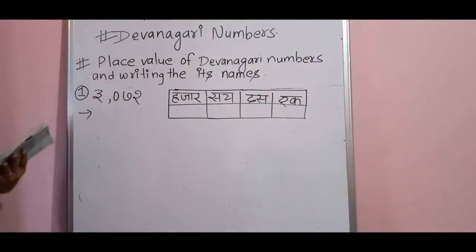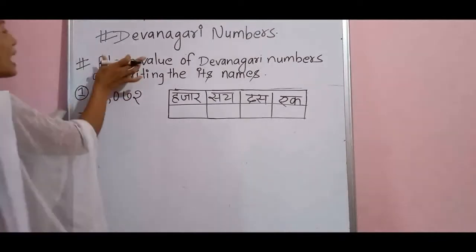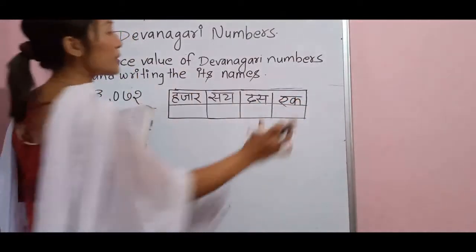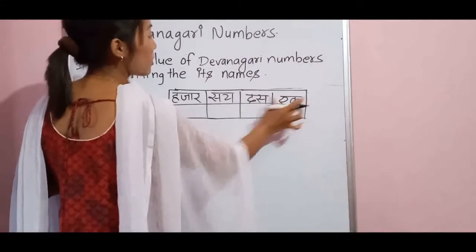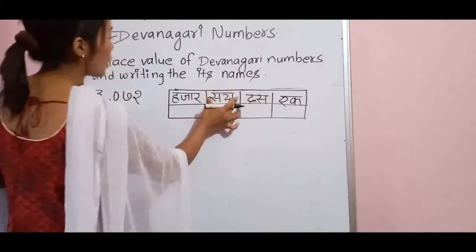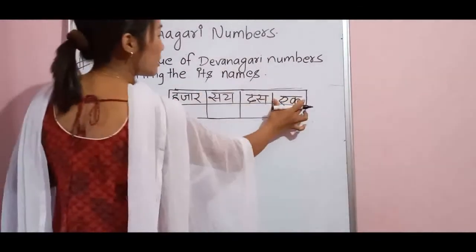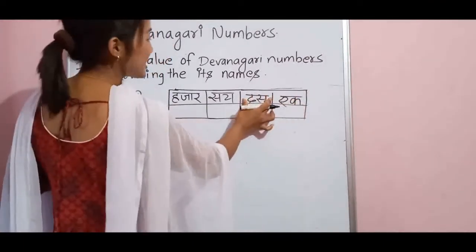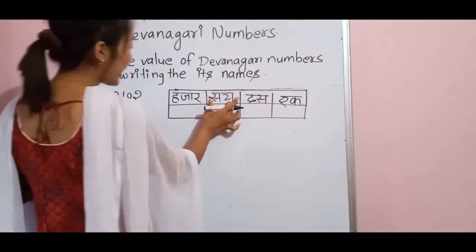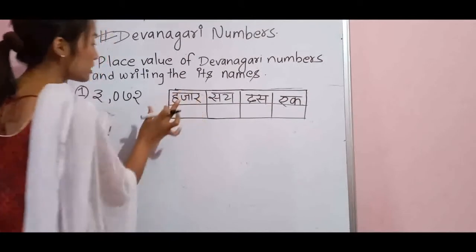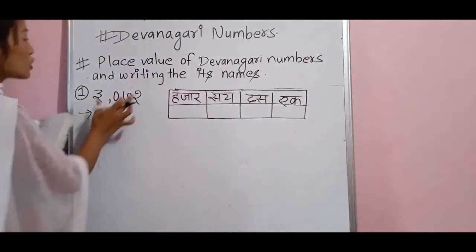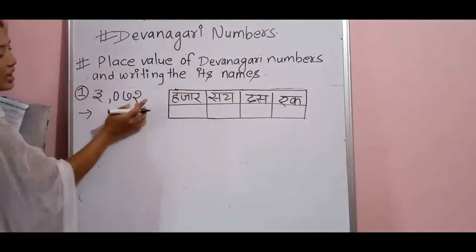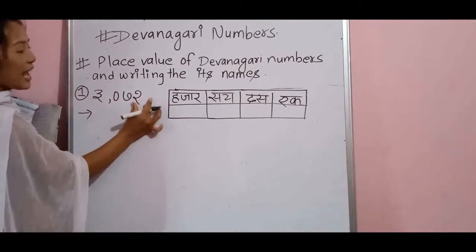I have taught you how to find place value of numbers. So here is how to place the value of Devanagari numbers. In Arabic numbers in English you say: ones, tens, hundreds, thousands. In Nepali, ones is 'eka', tens is 'dasa', hundreds is 'saya', thousands is 'hajar'. So you have to place this value. In Devanagari numbers also you count from the last: ones, tens, hundreds, thousands.